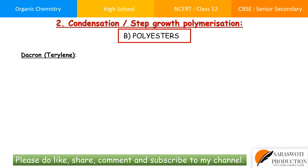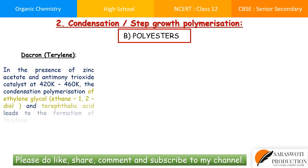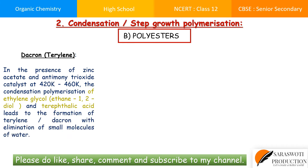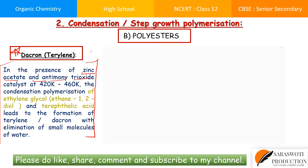The first example is Dacron, also called Terylene — a polyester formed from carboxylic acid plus alcohol to give esters, in the presence of zinc acetate and antimony trioxide as catalysts. In an exam, if asked what are the two catalysts used to form Dacron/Terylene from its two monomers, these are: zinc acetate and antimony trioxide.